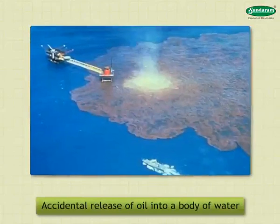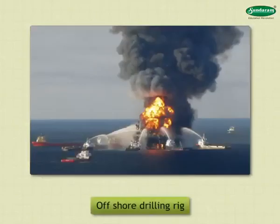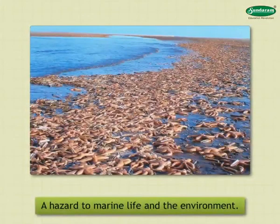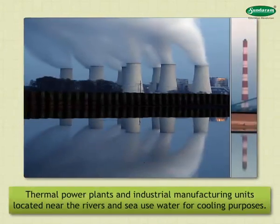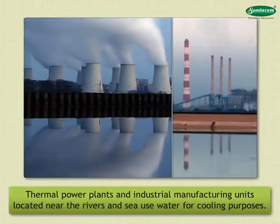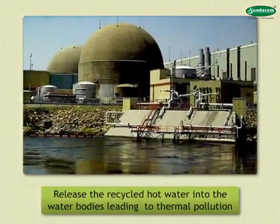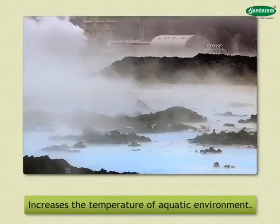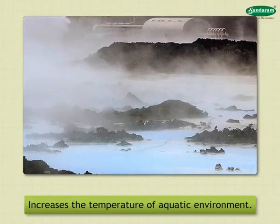Oil Spills: Accidental release of oil into a body of water, as from a tanker, offshore drilling rig or underwater pipelines and wells, often presents a hazard to marine life and the environment. Thermal Pollution: Thermal power plants and industrial manufacturing units located near rivers and the sea use water for cooling purposes. They release recycled hot water into water bodies, leading to thermal pollution. This hot water increases the temperature of the aquatic environment.